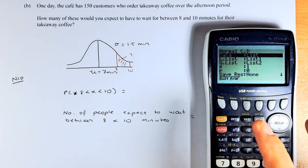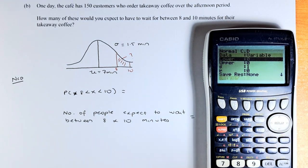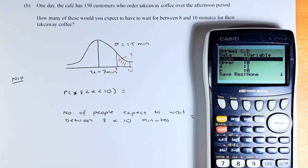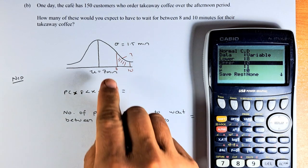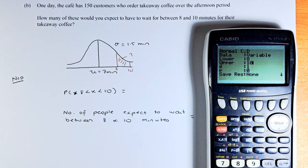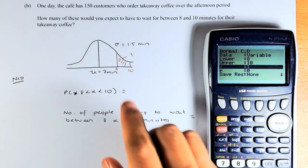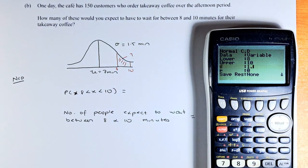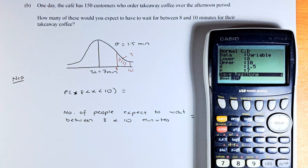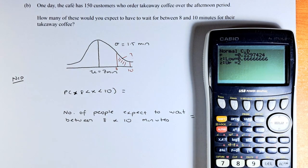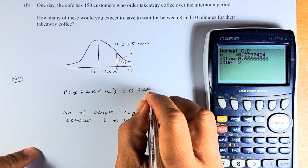We must always key in variable. So put F2 for variable. Lower is where the probability is going to start, which is 8. Press the execute button. The upper is where it's going to end, which is 10. Press the execute button. The sigma is 1.5, which is the standard deviation. The mu is the mean, which is 7. Press the enter key, and then press enter key again. The answer is going to be 0.2297.